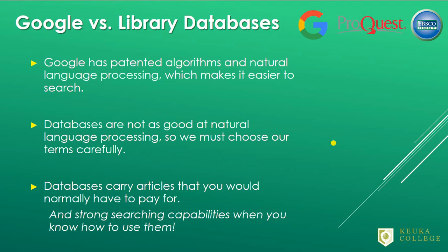Before we get started, let's talk a bit about how doing a search in Google, or in any search engine, is a little different from searching in a library database. Search engines like Google are very flexible with what search terms you use. This is because they have patented algorithms and natural language processing, which identifies the most important words in your search for you. When you're searching in a library database, you need to identify and isolate the most important words you need for your search, because they are not quite as good at the natural language processing.